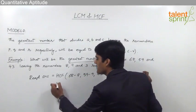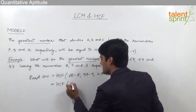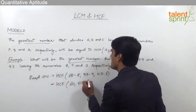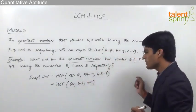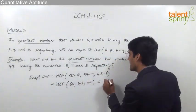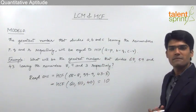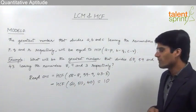So this will be equal to the HCF of 60, 50, and 40. And when we solve this, we get the answer as 10. The highest common factor of 60, 50, and 40 will be equal to 10.